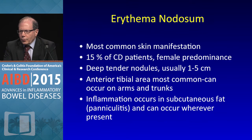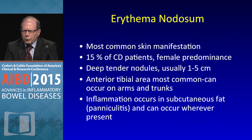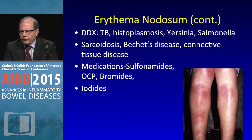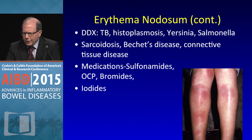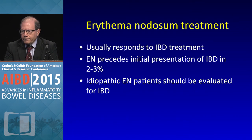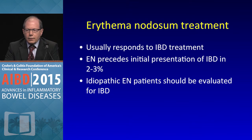Some skin manifestations parallel the disease and some don't. Erythema nodosum is most common, affecting up to 15 percent of Crohn's patients — interestingly more common in women. Deep tender nodules can be anywhere on the trunk and arms, not just the front; it's inflammation in the subcutaneous fat. You also have to be careful with fever — consider histoplasmosis, medications like sulfonamides, or oral contraceptives. Erythema nodosum can precede IBD in two to three percent of cases, so patients with idiopathic erythema nodosum should be evaluated for IBD.